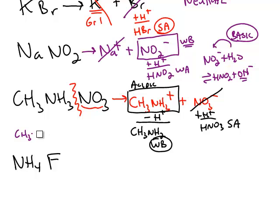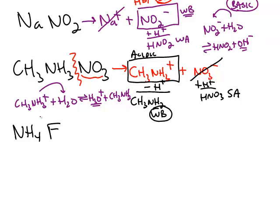in water, CH3NH3+ will donate a proton to the water. It's a weak acid so it makes an equilibrium, producing more hydronium which turns the water acidic. The last one: NH4F ammonium fluoride dissociates